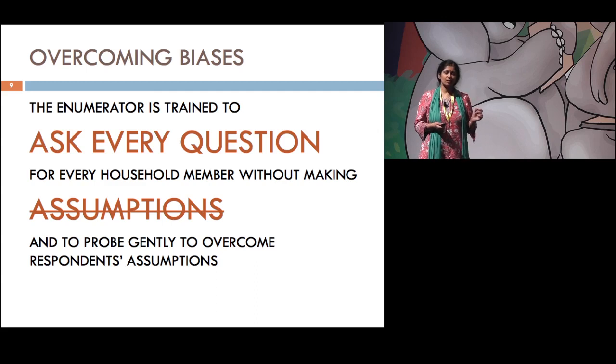So the enumerator is trained specifically to ask each and every question for each and every person living in that house. So suppose the head of the household is a Hindu. It is not to be assumed that all the members of the family are Hindu. You can't just write Hindu and Hindu and Hindu. You have to ask for each person. That's part of the training. Similarly, for the respondent, you have to ask in such a way to overcome any bias that person seems to be showing.